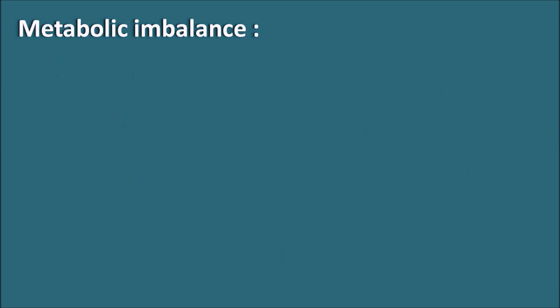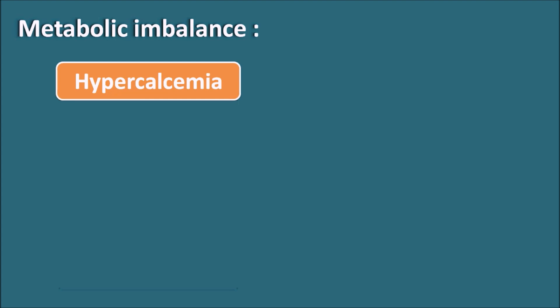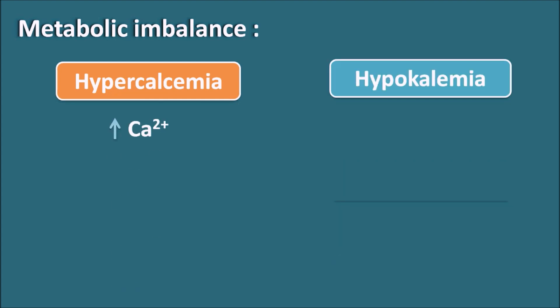Metabolic imbalance: sometimes the metabolic imbalance where the ionic levels within the plasma are fluctuated may also result in the increase in the QT interval. For example, two important ions are calcium and potassium. Conditions like hypercalcemia — where there are elevated levels of calcium — or hypokalemia, that is reduced levels of potassium within the plasma, may result in the increase in the QT interval.